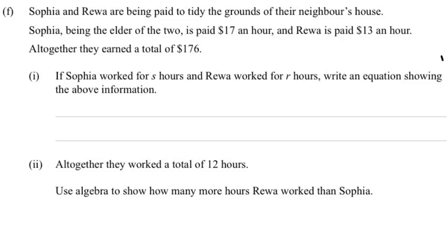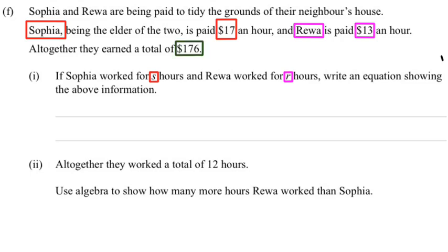First off, we have Sophia. She's getting paid $17 an hour and she's worked for S number of hours. Then we have Riva — she is getting paid $13 an hour, and her number of hours worked can be written as R. Now altogether, they earned a total of $176.